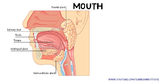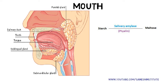Firstly, let us start with the mouth. Mouth contains salivary amylase, an enzyme also called as ptyalin, which converts starch into maltose. It requires a basic medium which is provided by saliva.